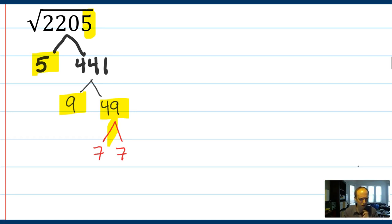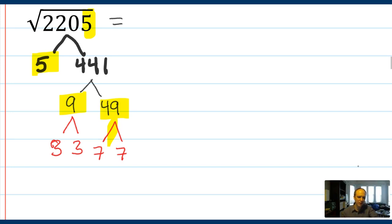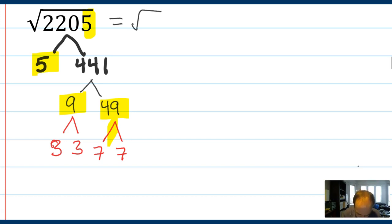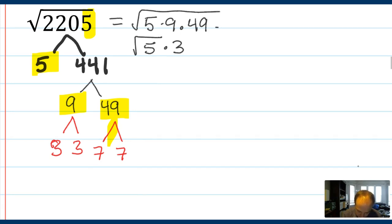Both 9 and 49 are perfect squares. If you didn't know the divisibility trick for 441, you'd just start guessing and checking — try 3, try 7, and they would work. Knowing those divisibility tricks can save you time, especially with 9s. So we write this as the square root of 5 times 9 times 49, which equals the square root of 5 times 3 times 7, giving us 21 root 5. That's all it takes to reduce a square root, even if the number is really gross.